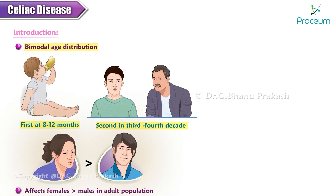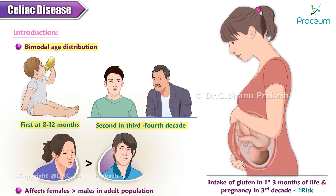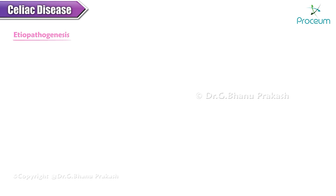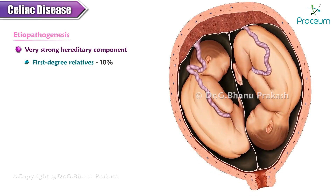It affects females slightly more than males in the adult population, whereas in children males and females are affected equally. Intake of gluten in the first three months of life and pregnancy in the third decade is associated with an increased risk of developing celiac disease. Celiac disease has a very strong hereditary component; its prevalence in first-degree relatives is nearly 10 percent.